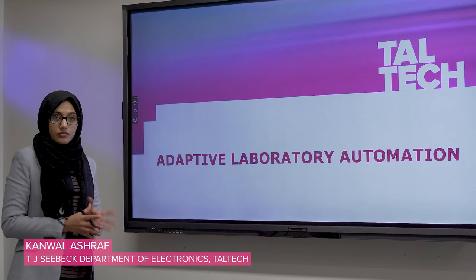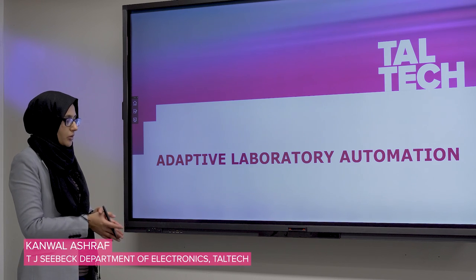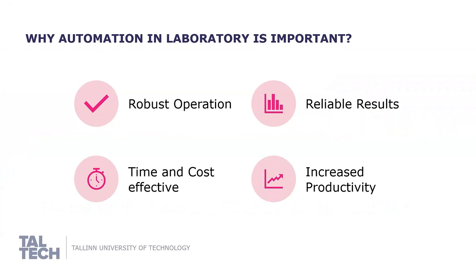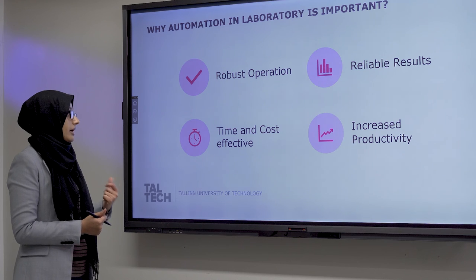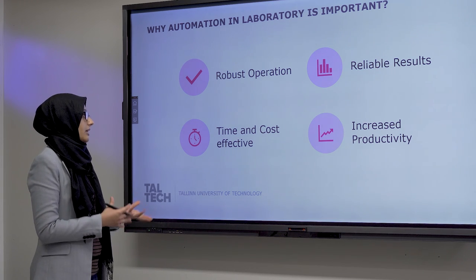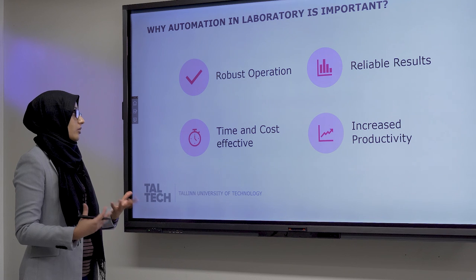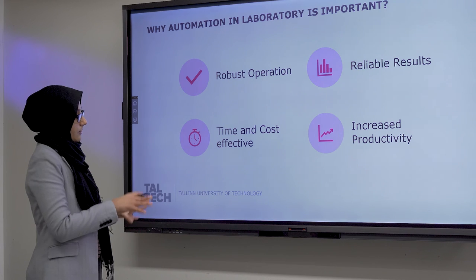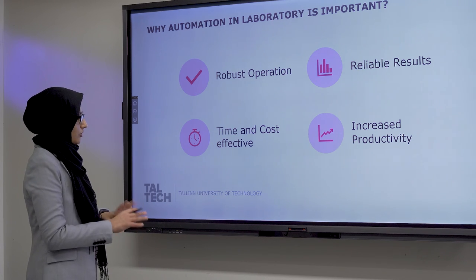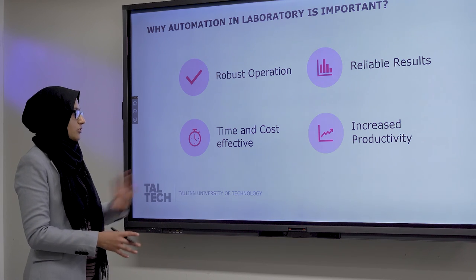Now that we have covered the basics of adaptive automation, let us move toward adaptive laboratory automation. The reasons we need adaptation in laboratory are the same as in any other devices: we need robust operation of the device and reliable results where we can eradicate human error. We could achieve higher resource efficiency — lower time, cost-effective results — and increase productivity by shifting most of the workload from humans to machines.